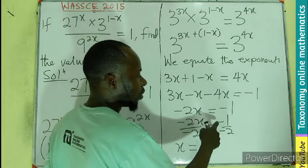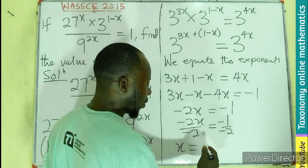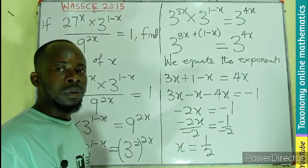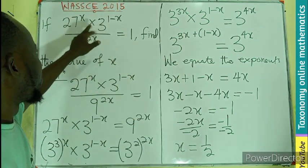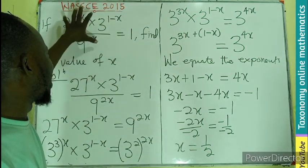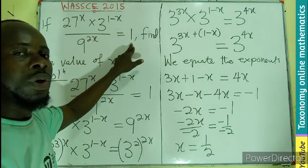So negative 2, negative 2 will cancel. x will be equal to negative, negative will cancel. You have only 1 over 2. So this is the value of x that will satisfy the left to be equal to 1.